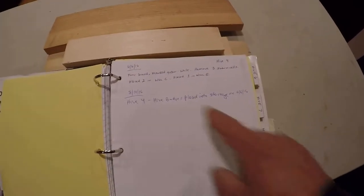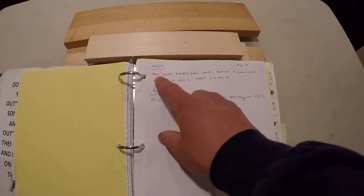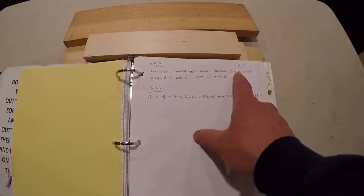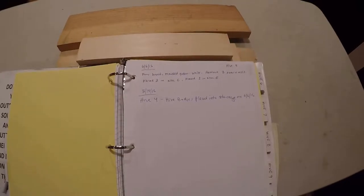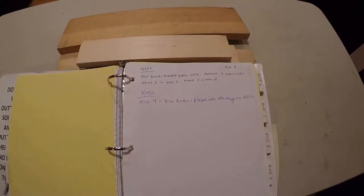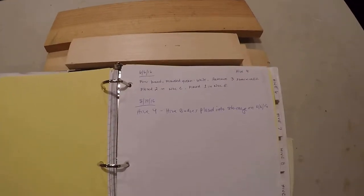Hive 4, back in last year, poor brood, marked the queen white, removed three swarm cells. This was probably one of my colonies that I had a really strong swarm tendency. I mean nothing was wrong, didn't have any concerns, it's just they tended to swarm a lot.